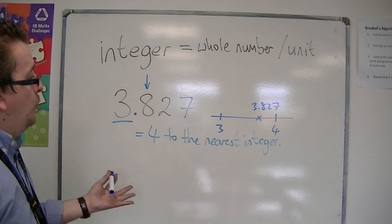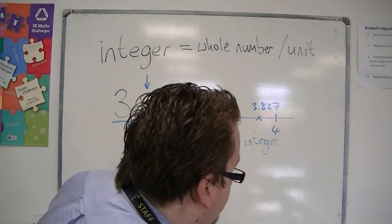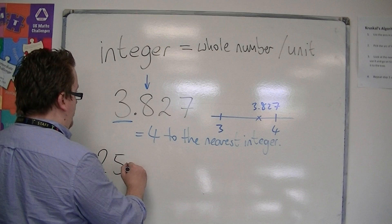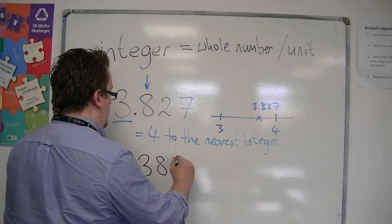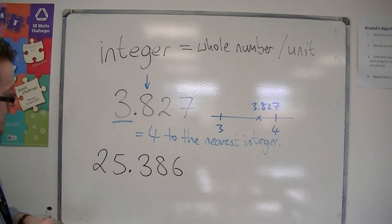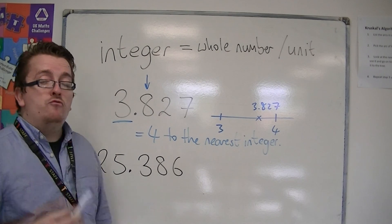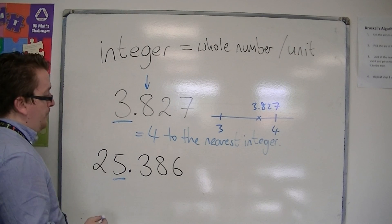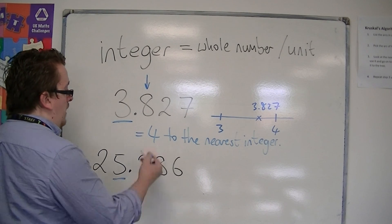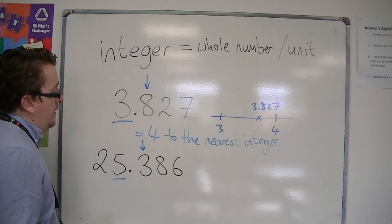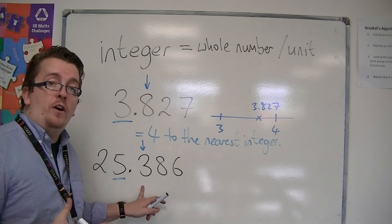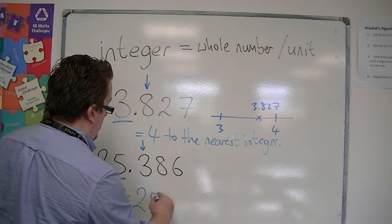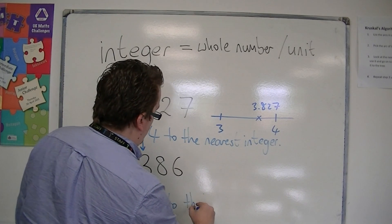If I had 25.386, then once again, rounding this to the nearest integer, I look at the integer column, the units column. I look one to the right. The number to the right is less than 5, so I would round this down to 25 to the nearest integer.